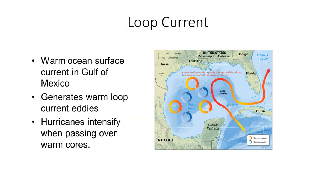Looking at other currents associated with the Atlantic Ocean basin — the loop current is a warm ocean current situated in the Gulf of Mexico that generates warm loop current eddies, with colder rings also denoted in the diagram. Hurricanes generally tend to intensify when passing over these warm cores. A great example occurred in 2005 with Hurricane Katrina — as Katrina moved into the eastern Gulf of Mexico, it passed over this loop current's exceptionally warm water and just exploded in development. These play huge roles in some of the more rapid intensification hurricane cases we've seen.